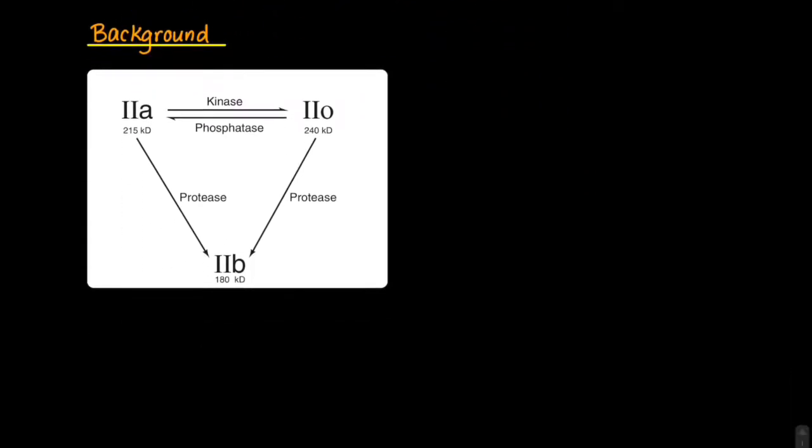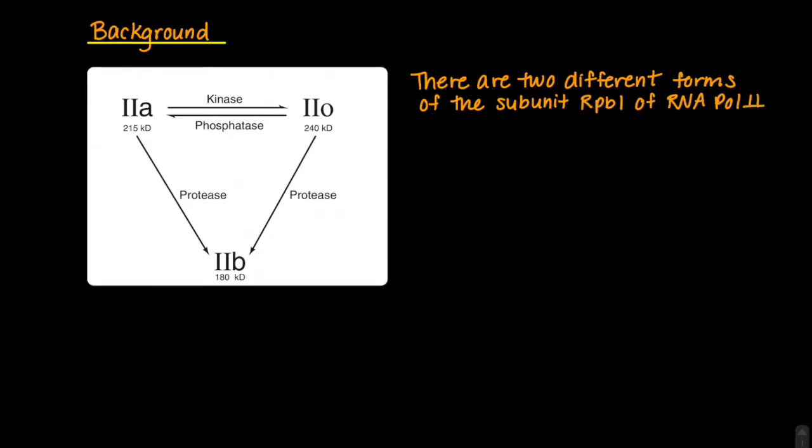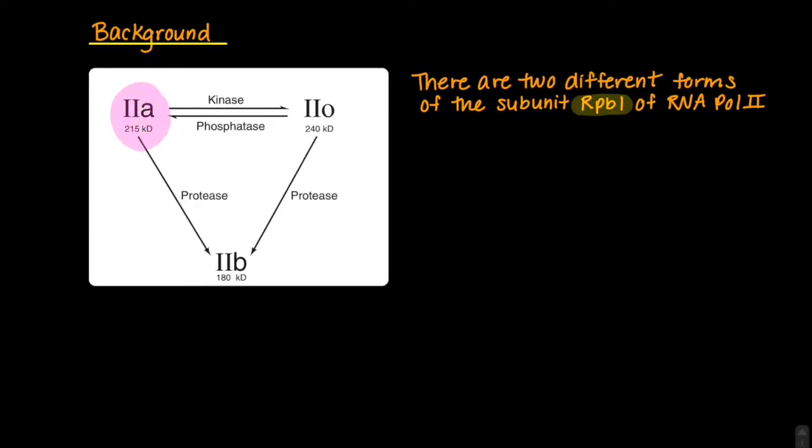We will first go into some background about RNA polymerase 2 and general transcription factors. From a past video, we know that there are two major forms of RNA polymerase 2, the 2A form and the 2O form. This 2A form, highlighted in pink, has the unphosphorylated version of the RPB1 subunit.